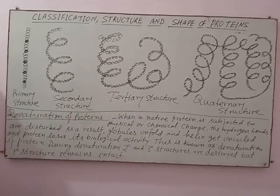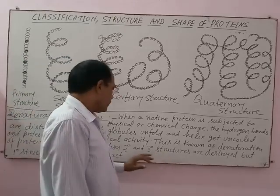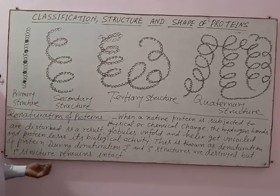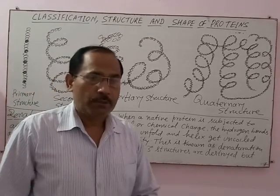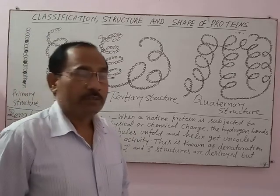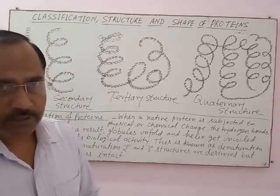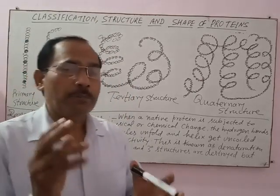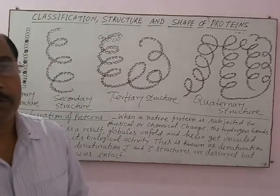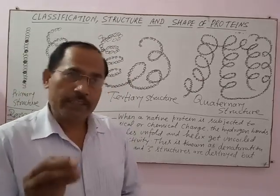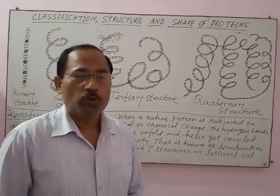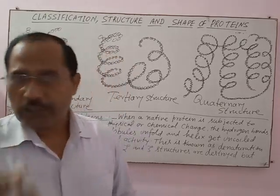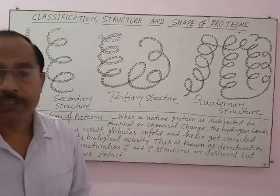During denaturation, the secondary and tertiary structures are disturbed or destroyed, but the primary structure remains intact. When proteins are heated or subjected to physical or chemical changes, their secondary and tertiary structures are destroyed, but the primary structure remains unchanged. For example, when an egg is boiled — subjected to a physical change — its secondary and tertiary structures get destroyed, but the primary structure remains intact.